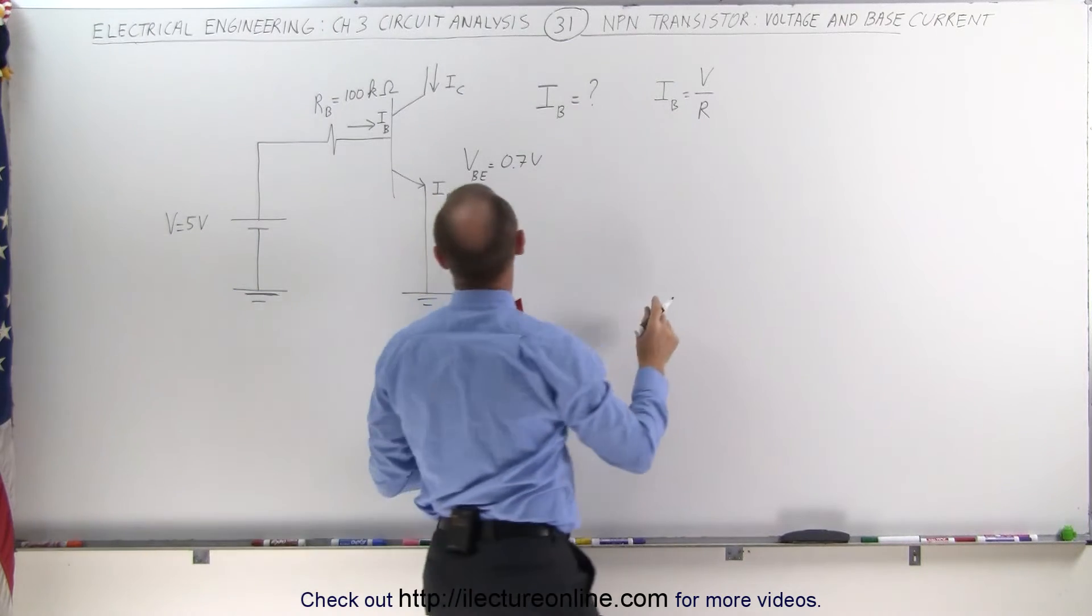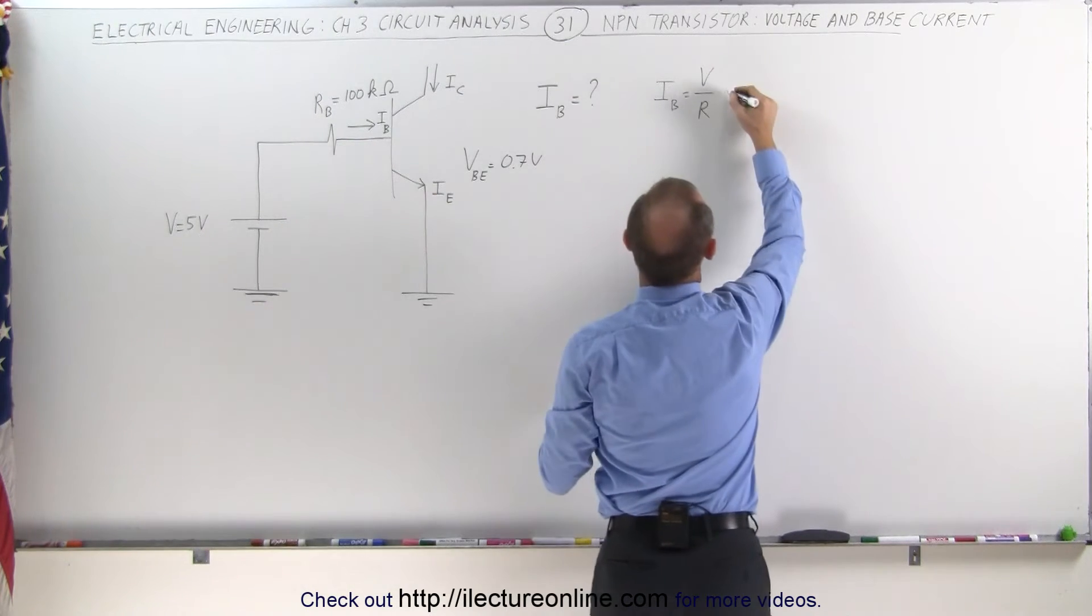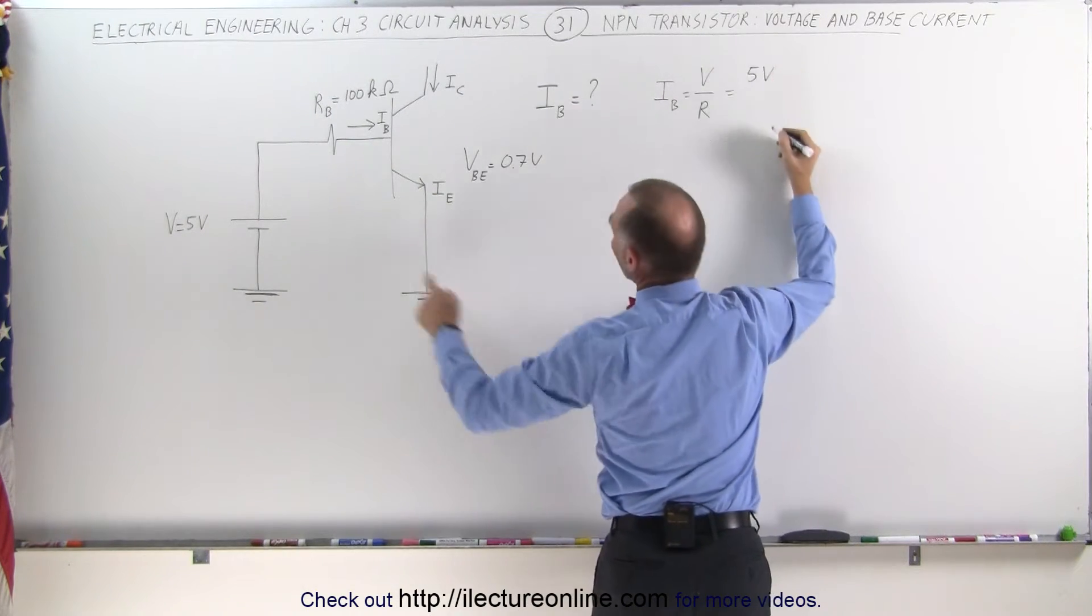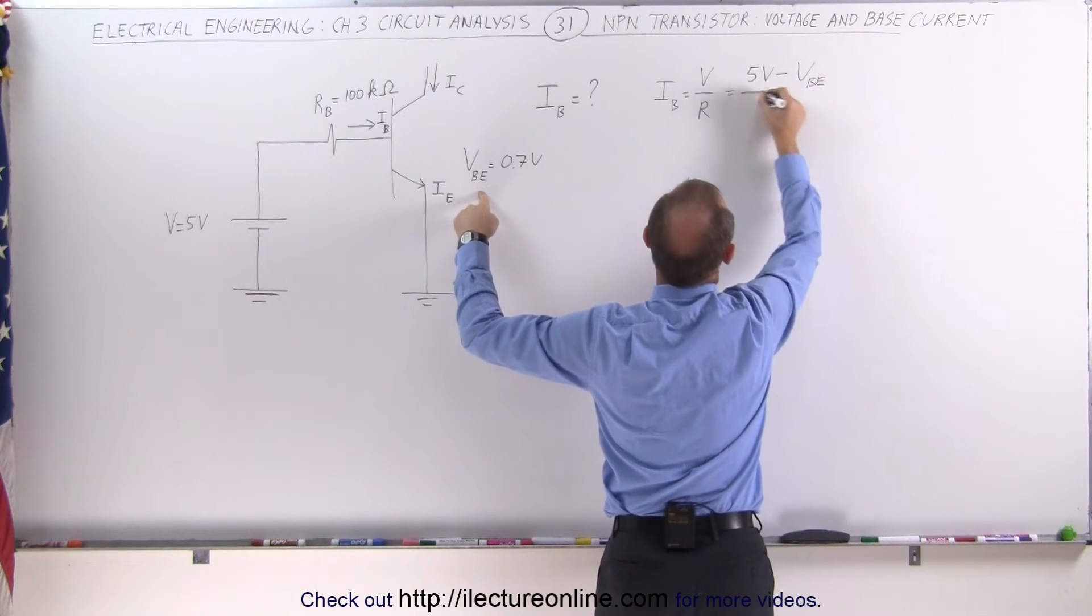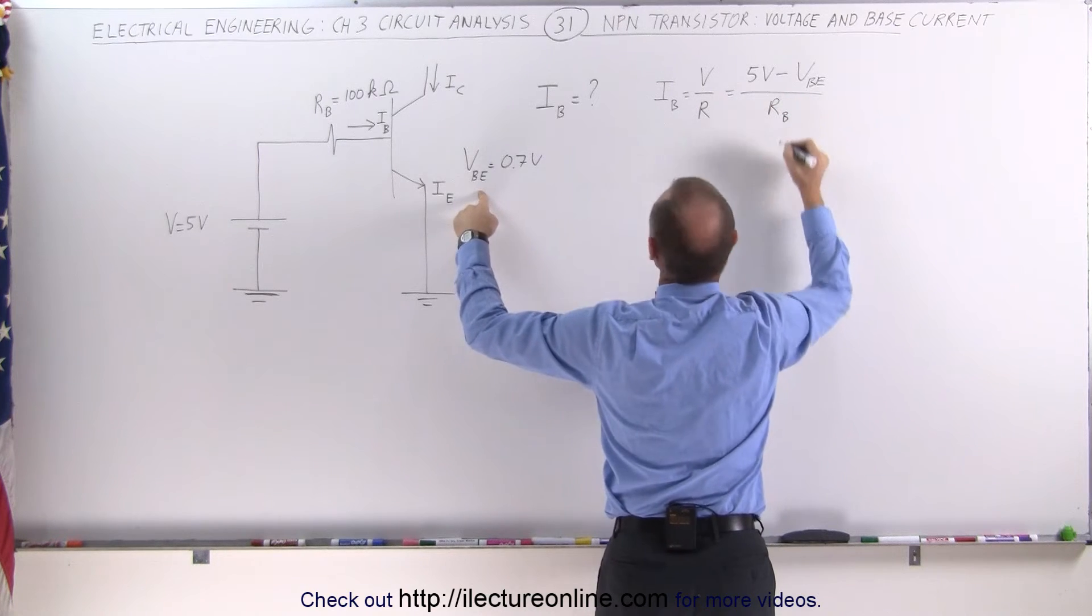We can then say that the voltage driving the current to the base is equal to the 5 volts from the voltage source minus the voltage from the base to the emitter, which is 0.7 volts, divided by the base resistance.